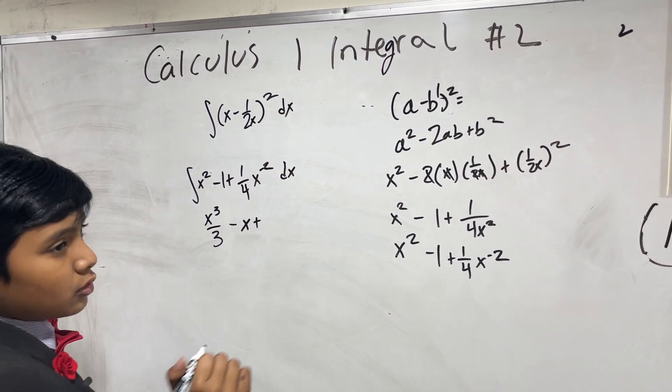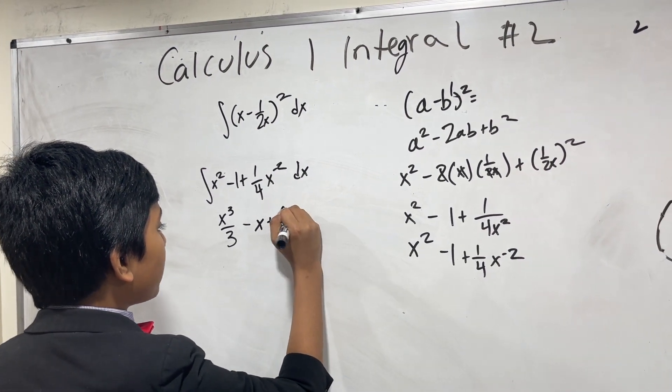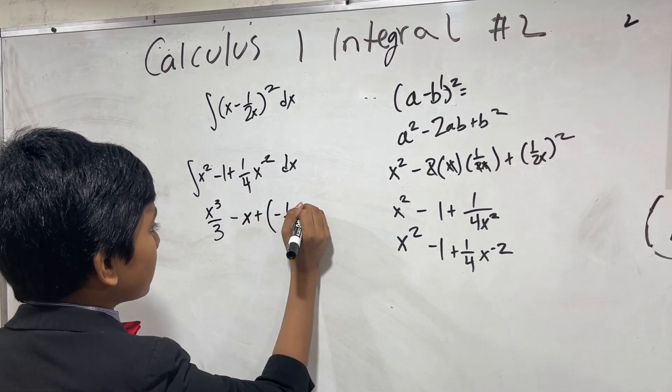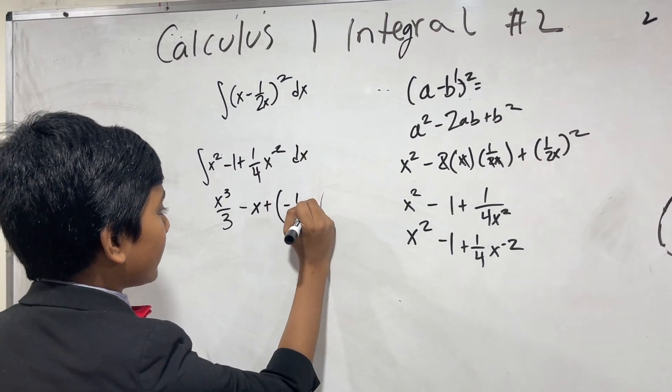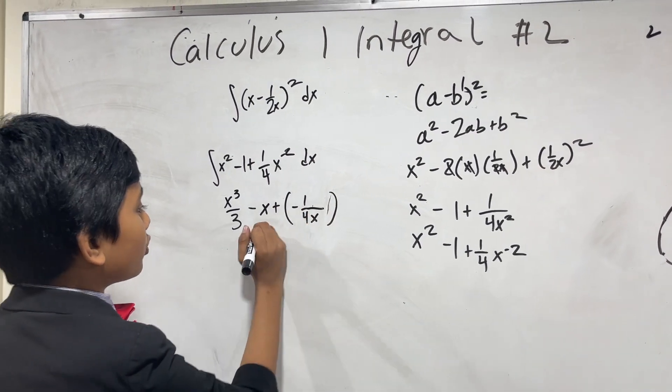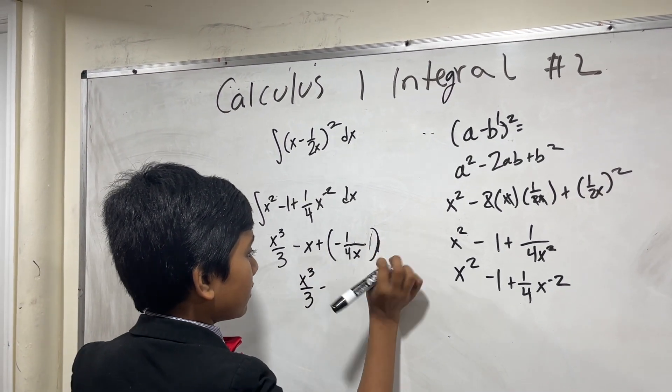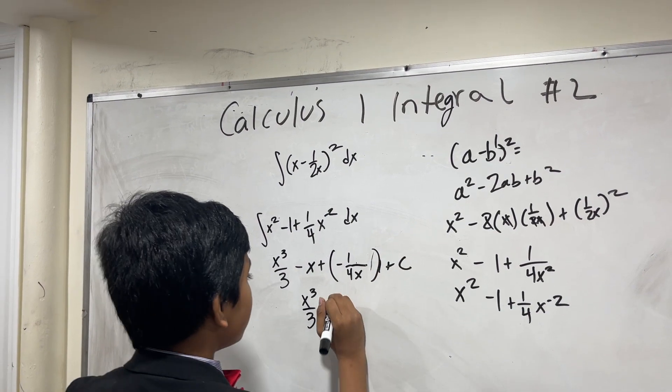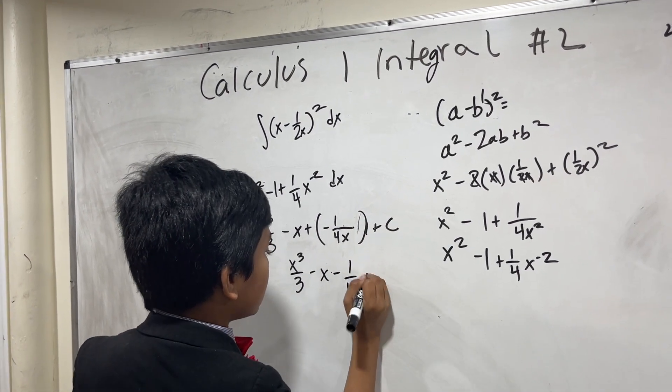Plus, we use the same power rule over here, so this gives us minus 1 fourth x to the minus 1, or if you want to not have negative exponents, this is minus 1 over 4x. It's x cubed over 3 minus x minus 1 over 4x plus c.